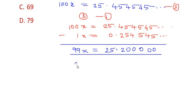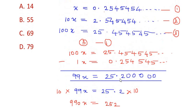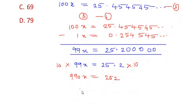Now finally we get it as 99x is equal to 25.2. Now to get rid of this decimal point again, we can multiply both the sides by 10. Now we get it as 990x is equal to 252. So we have changed the recurring decimal number into a fraction because x can be written as now 252 over 990.